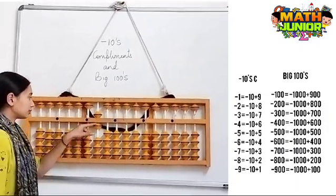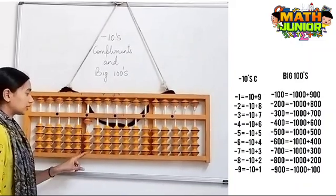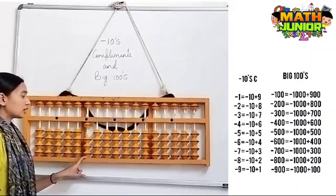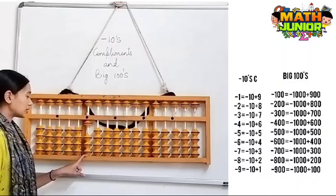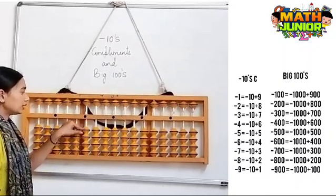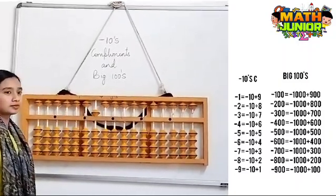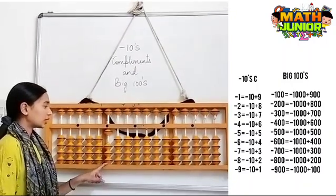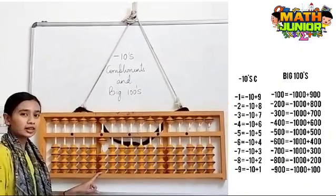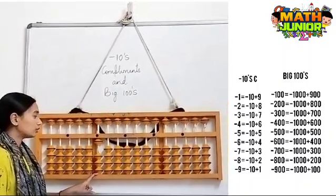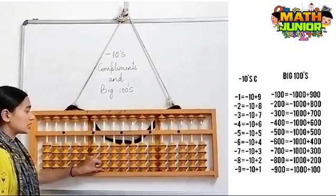Next, I have 1000 here and I need to remove 500. So the formula for minus 500 is minus 1000 plus 500. I have 1000 here and I need to remove 600. So the formula for minus 600 is minus 1000 plus 400.